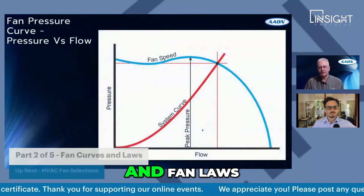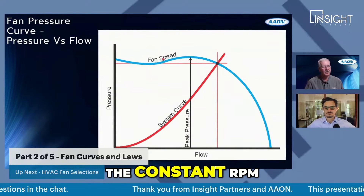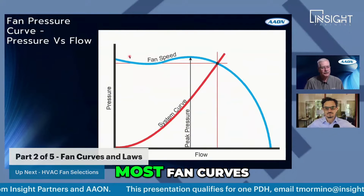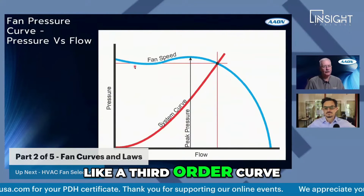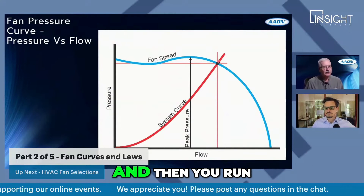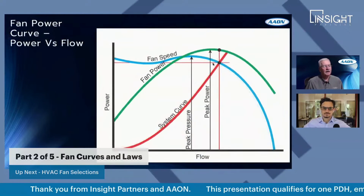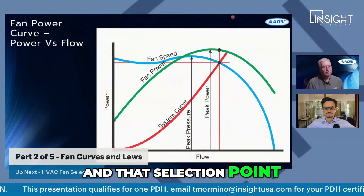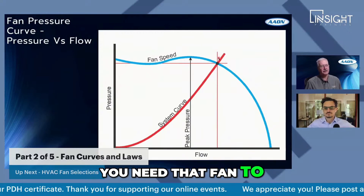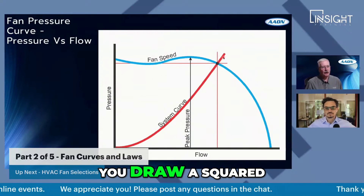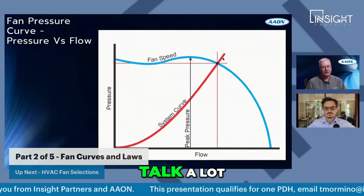We're going to talk a lot about fan curves and fan laws. This is the classic fan curve — the blue line is the constant RPM. Most fan curves show stuff towards zero flow with a nice little dip that looks like a third-order curve fit. You run that speed to where it crosses what we call the selection point — the flow and static pressure you need that fan to do for your particular application. If you draw a squared-function curve through that selection point, we call that the system curve. We're going to talk a lot about system curves here in a minute.